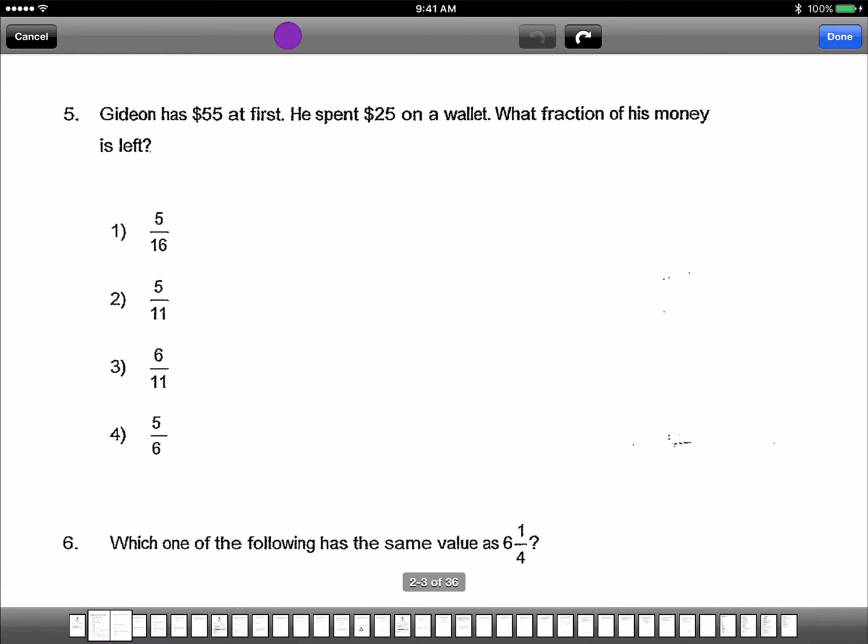Next, multiple choice. Gideon has $55 at first. He spent $25 on a wallet. What fraction of his money is left? So if you take $55, take away $25 is $30. But we want to know what fraction is left, 30 over 55. A common factor divided by 5. So we get 6 out of 11. So the answer is 3.